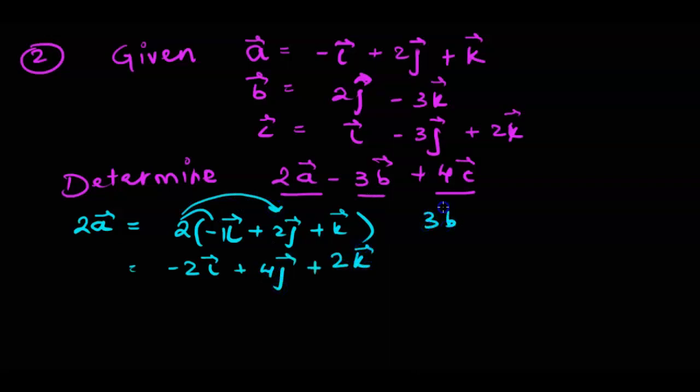Similarly we will be able to get 3b value. So 3b is nothing but 3 multiplied by vector b. Because i is missing you can put it as 0i. 3 times 0 is 0 so we technically are left with 0i itself. Plus we have got 6j minus 9k.